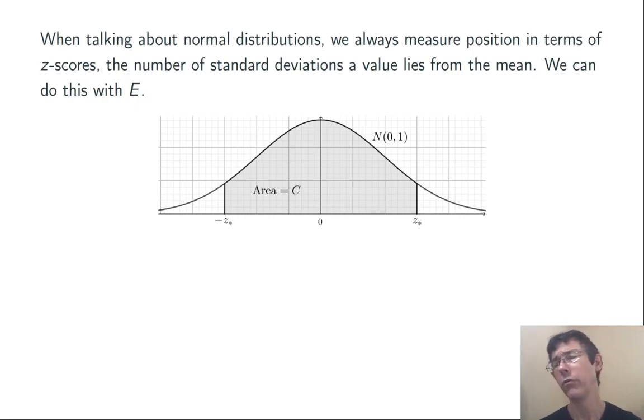When talking about normal distributions, we always measure position in terms of z-scores, number of standard deviations that a value lies away from the mean. So let's do that with E here.